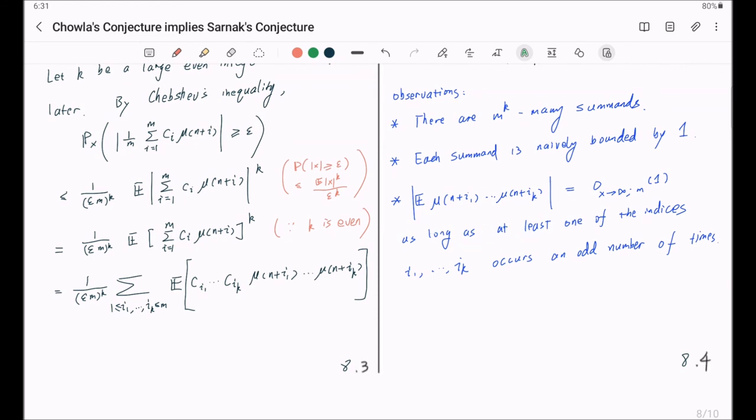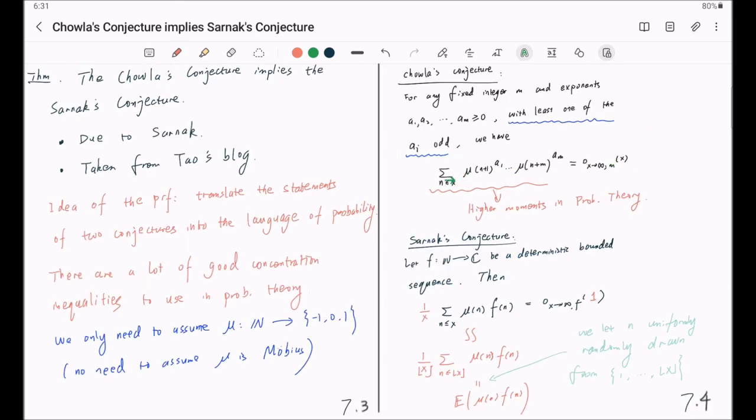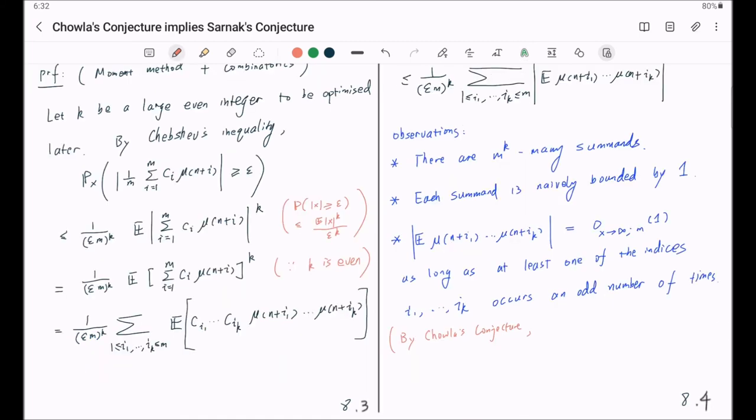Now, let me explain this observation more carefully. How does this follow from Chowla's conjecture? By Chowla's conjecture, if we divide both sides by the floor of x, the largest integer less than or equal to x. Let me get these exponents estimate that this is a little o of 1 as x goes to infinity. This holds